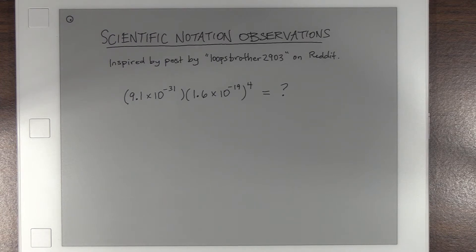The question asked by LoopsBrother2903: how do I get my Casio, I believe they had a 991EX, how do I get it to do this problem? I keep getting zero and I know that's not the right answer. And they even knew the correct answer. And I thought, well, that's interesting. I would have thought it would do that.